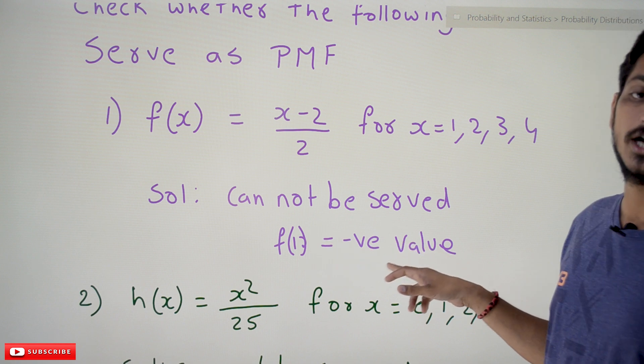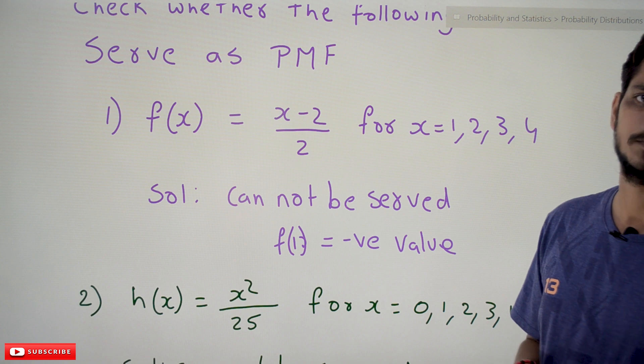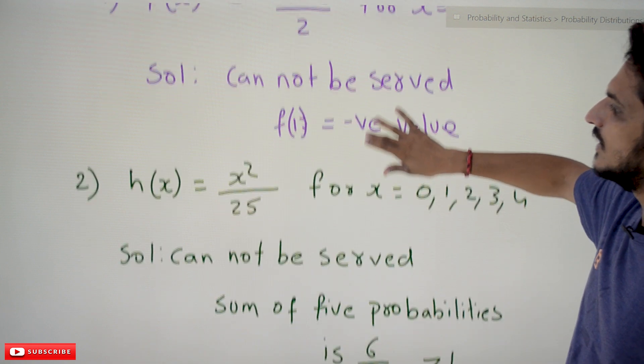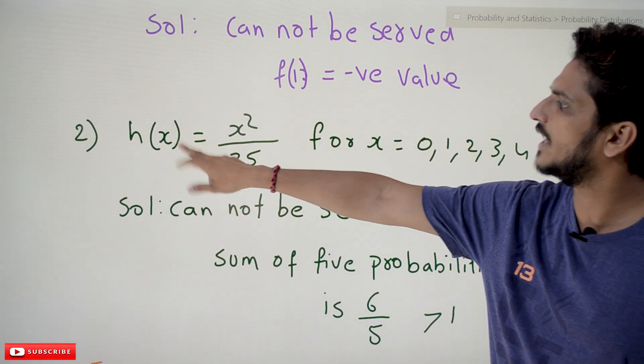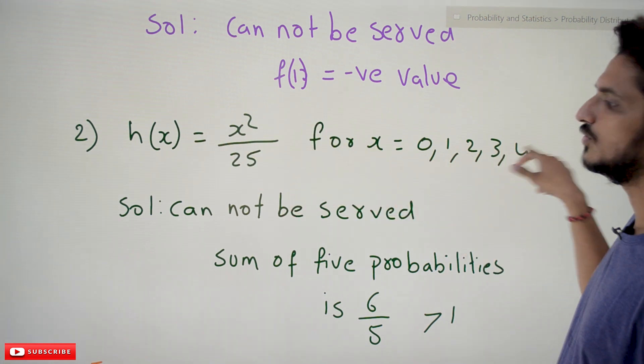Coming to the next one, second example: h(x) = x²/25 for x = 0, 1, 2, 3, 4. Is this function can be served as a probability mass function?